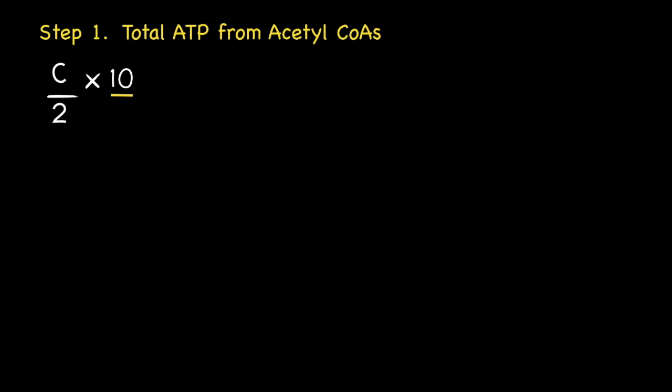Now we can simplify this expression, giving 10C over 2, which can be further simplified to give 5C. Or put another way, if you divide 10 carbons by 2, you get 5 carbons.